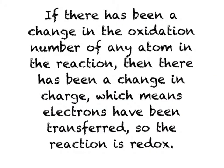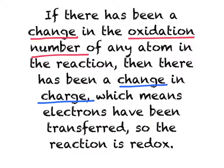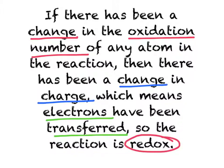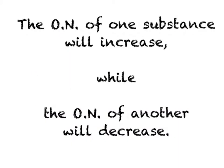So in summary, if there's been a change in the oxidation number of any atom in the reaction, then it means there's been a change in the charge, which means that electrons have been transferred, and so the reaction must be redox. Note that the oxidation number of one substance — the one that undergoes oxidation — will increase, while the oxidation number of the other substance that undergoes reduction will decrease.